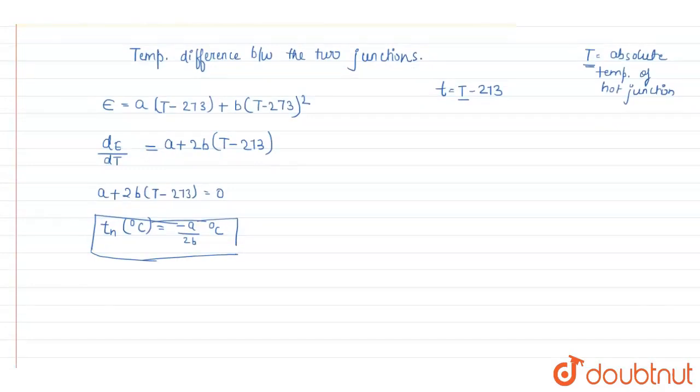First of all let's see Peltier coefficient. That is pi is equal to T into de upon dt. So that will be T into, what is de upon dt, we have the value, that is a plus 2b into t minus 273.